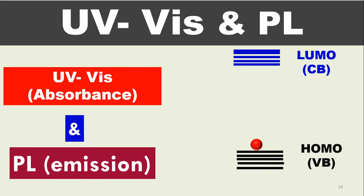In detail, when talking about absorption, we are talking about UV-Vis spectroscopy — we use ultraviolet-visible radiations to bombard the material and we excite the electron from the ground state to the excited states. This level we call HOMO (Highest Occupied Molecular Orbitals), where orbitals are filled with electrons, and this we call LUMO (Lowest Unoccupied Molecular Orbital), where orbitals are empty.